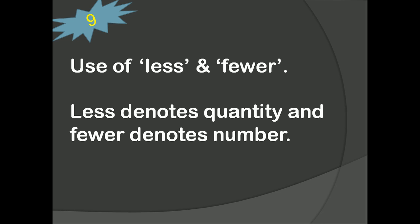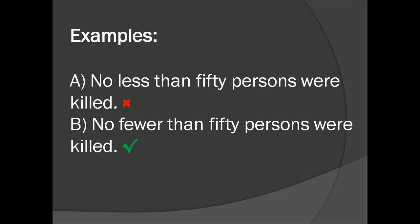Let's look at the ninth trick. Use of less and fewer. Less denotes quantity and fewer denotes number. We generally commit mistakes when using less and fewer. Please do remember this. For example, no less than 50 persons were killed. No fewer than 50 persons were killed. Which one is correct? No fewer than 50 persons were killed.